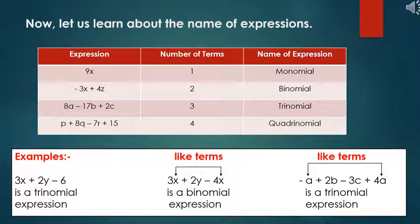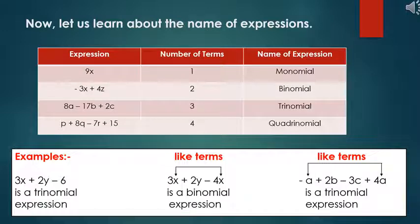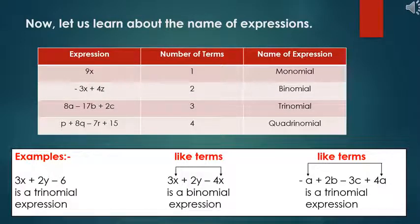Look at some examples. 3x plus 2y minus 6 has three terms, so we call it a trinomial. Next, 3x plus 2y minus 4x — here the variables x are the same, meaning they are like terms, so this expression is a binomial. Then, minus a plus 2b minus 3c plus 4a — here minus a and plus 4a are like terms, giving three terms total, so this expression is a trinomial.